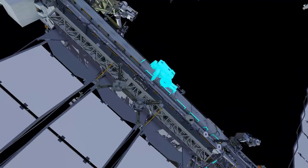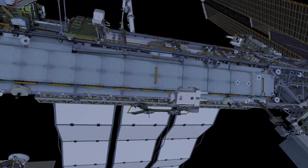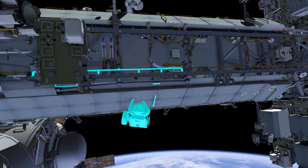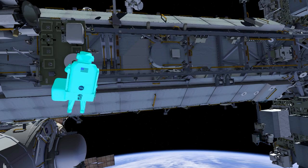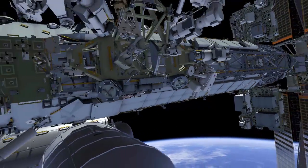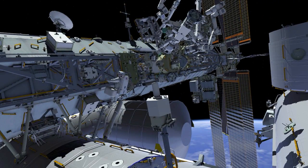EV2 retraces the path back to the crew equipment translation aid cart, drops off the now empty reel bag, and takes a different bag to the US laboratory module.